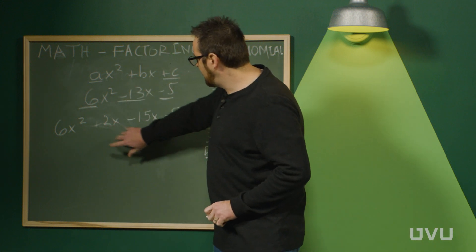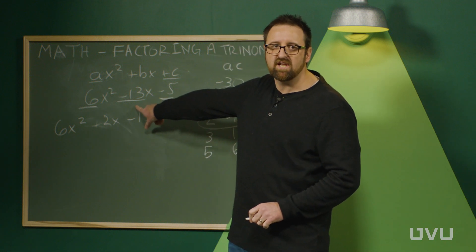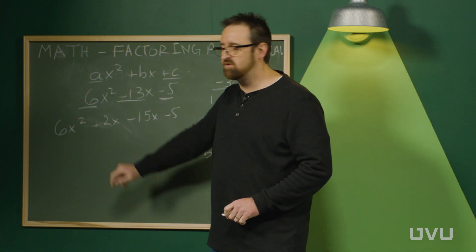Like this. So you can see that I've got 2x minus 15x. That equals the negative 13x. So there's no change between that line and the next.